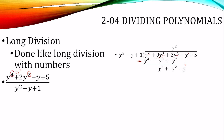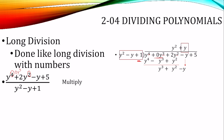Then we bring down and repeat the process. Divide the first terms: y cubed divided by y squared is y. Then we multiply — y times y squared is y cubed, y times negative y is negative y squared, and y times one is y. Then we subtract: y cubed minus y cubed is zero. Y squared minus negative y squared makes plus, so y squared plus y squared is 2y squared. And negative y minus y is negative 2y.